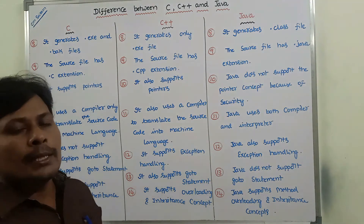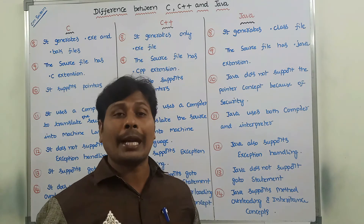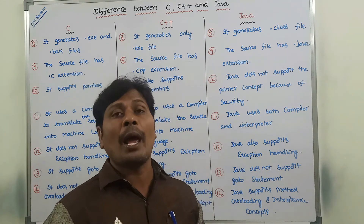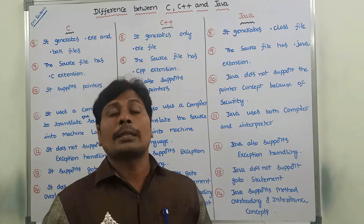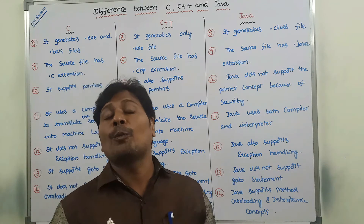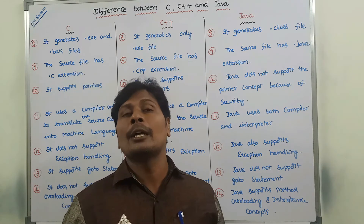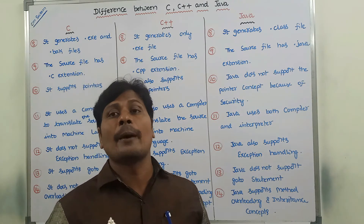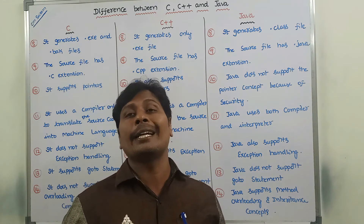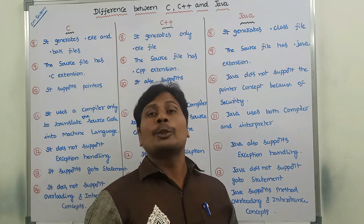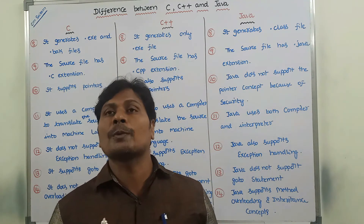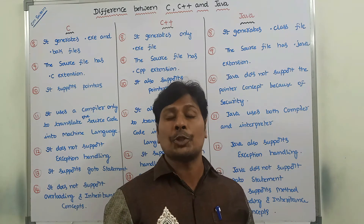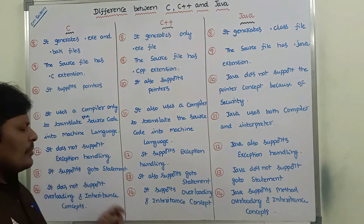C language uses a compiler to translate source code into machine code, using the Turbo C compiler. In C++ we use the Turbo C++ compiler to translate source code into machine language. But Java uses both a Java compiler and an interpreter to execute the Java program. To compile, we use the javac compiler, and to execute we use the Java Virtual Machine (JVM).